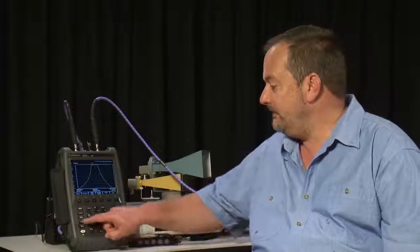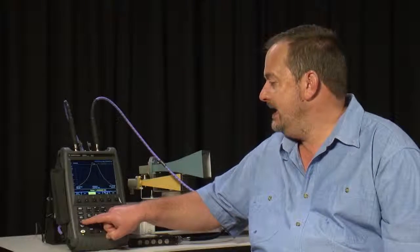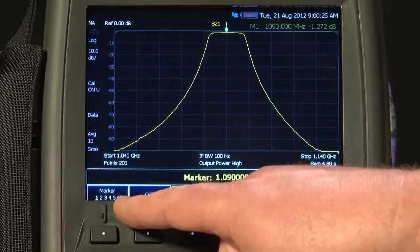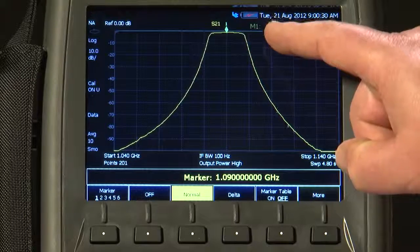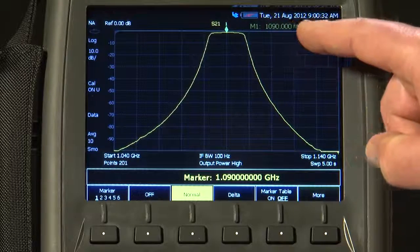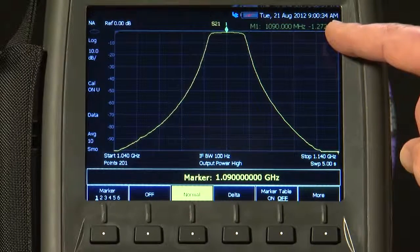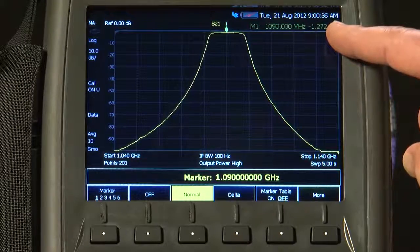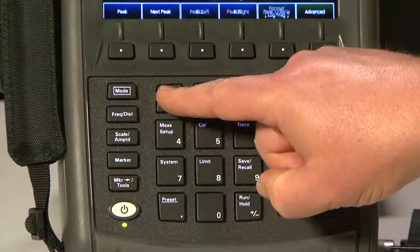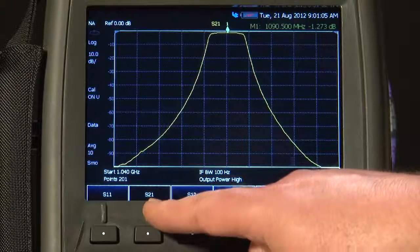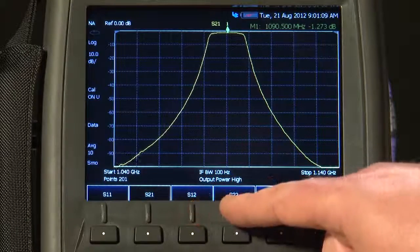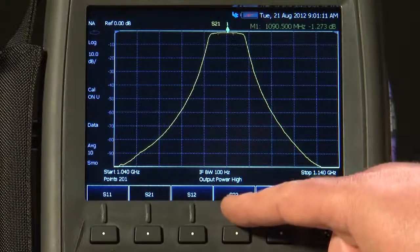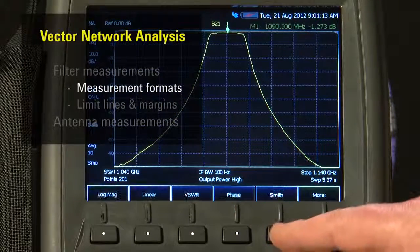I can press the Marker button and you can see a normal marker on the screen at the moment, Marker 1, which is at 1090 MHz and an insertion loss of 1.272 dB. Pressing the Measure key, we are measuring S21 insertion loss, but I could have selected S11, S12 or S22, and a range of formats you would expect to see on a Vector Network Analyzer.